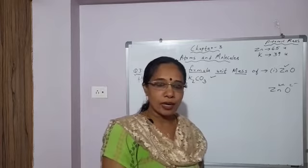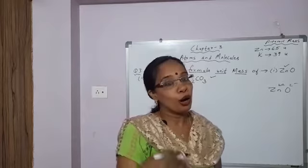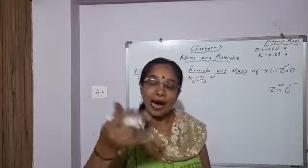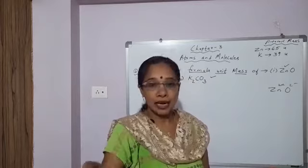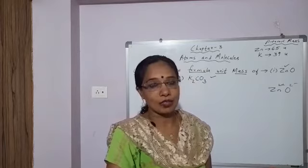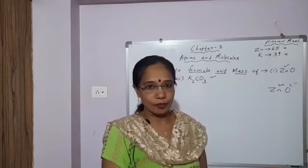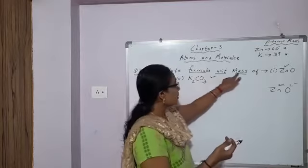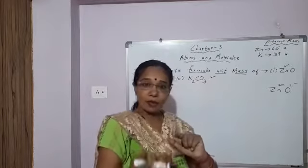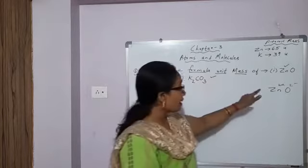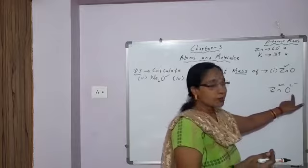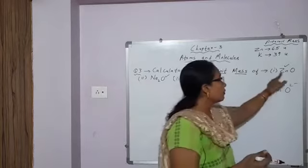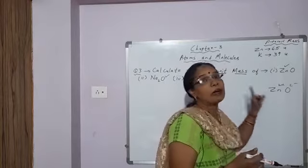So what do you do for formula unit mass or molecular mass? You add up the atomic masses of the atoms. To find the formula unit mass, you add up the atomic masses of the atoms present in one formula unit of the compound.